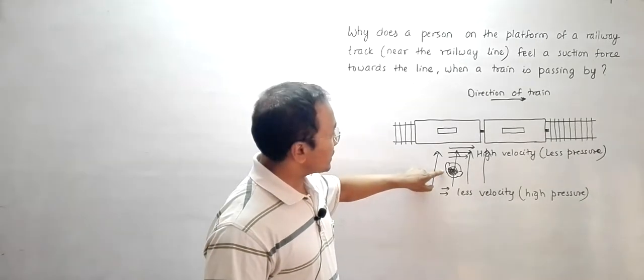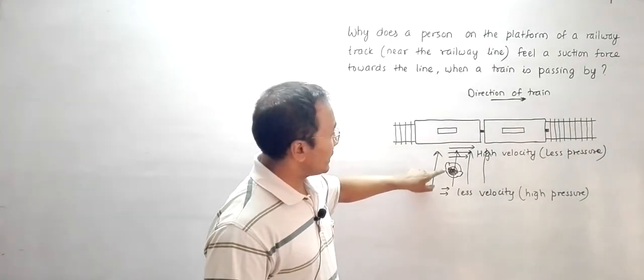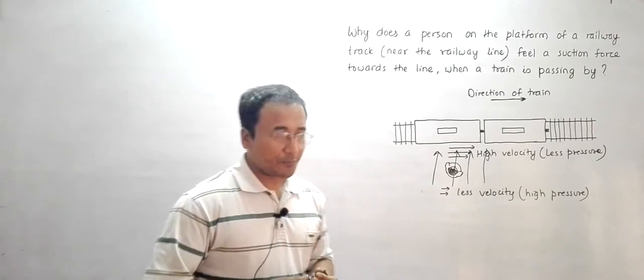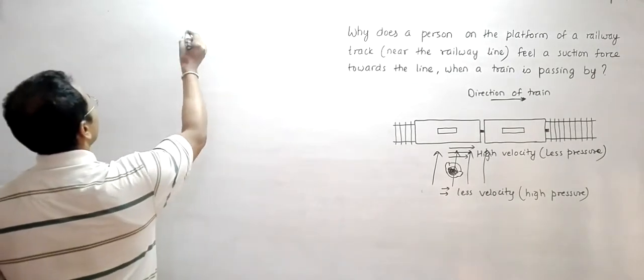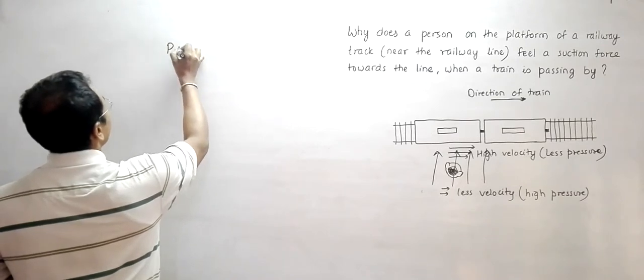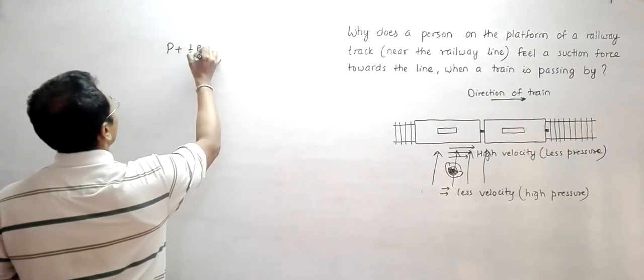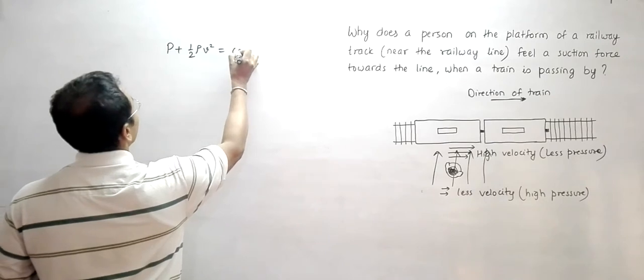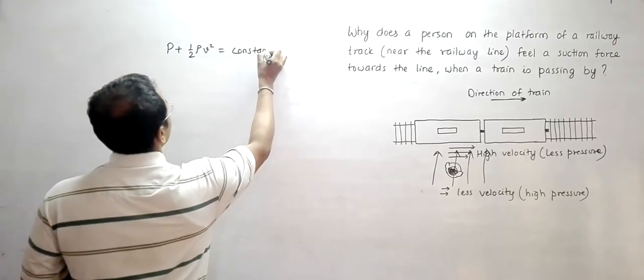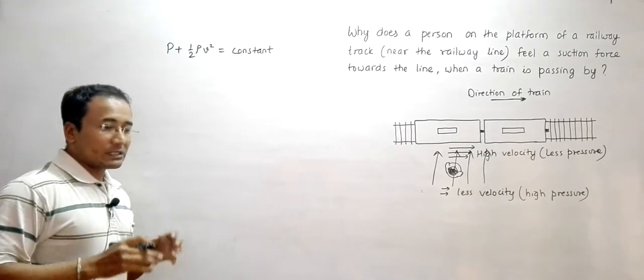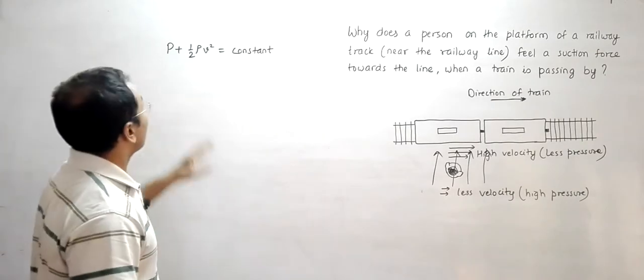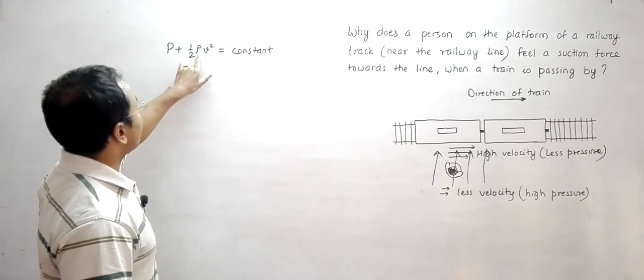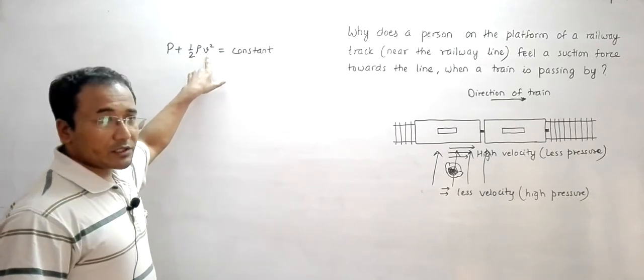In front of the person, the velocity of air is high and at the back of the person, the velocity of air is less. Now the relation for Bernoulli's theorem, when the height is the same, is p plus 1/2 rho v squared equals constant. This equation is valid when the height from where the air flows and to where the air flows are the same. P is the pressure, rho is the density, and v is the velocity of air.